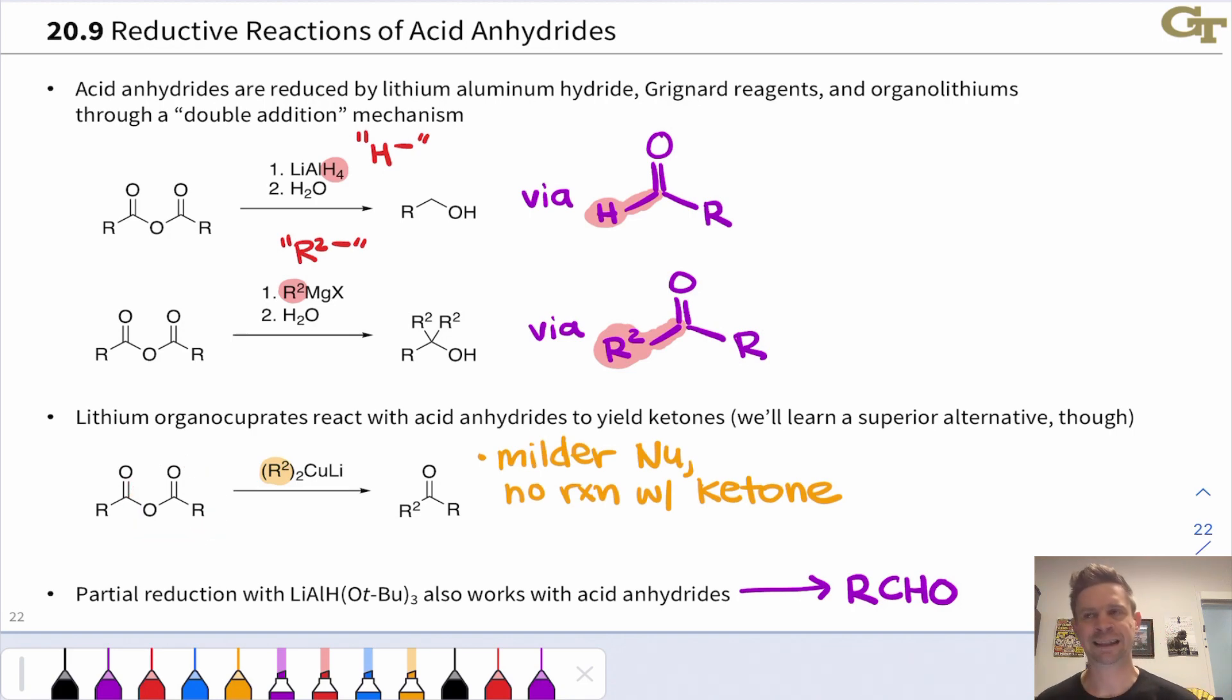Anhydrides get a little tricky when they're not symmetric, when these two R groups are not the same. You may or may not see that in your courses. Sometimes I cover it, sometimes I don't. Generally, which carbonyl reacts has to do with steric and electronic effects. That can get a little tricky, complicated to deal with. We probably won't wade into that, certainly not in videos, but may touch on it in class.